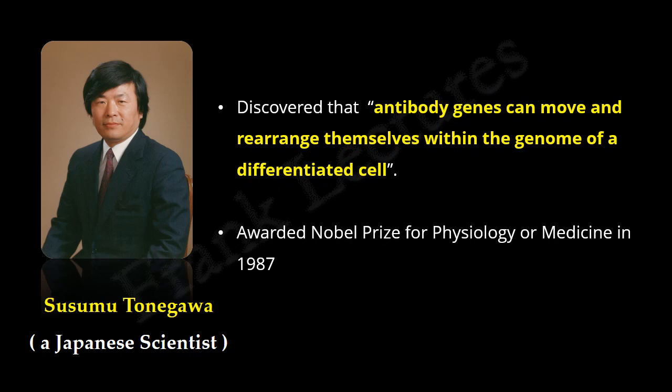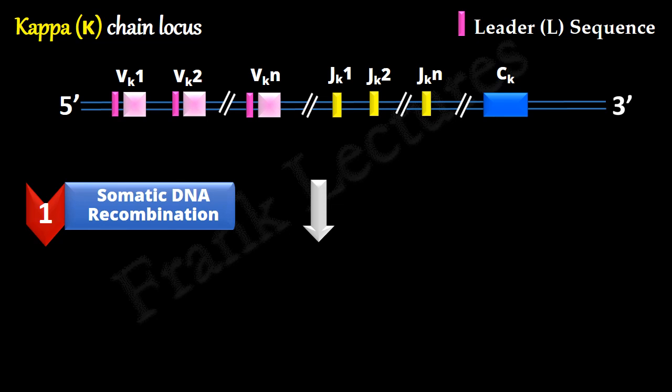It was Susumu Tonegawa, a Japanese scientist, who discovered that immunoglobulin genes can move and rearrange themselves within the genome of a differentiated cell. He was awarded Nobel Prize for Physiology or Medicine in 1987.